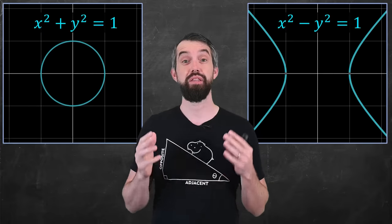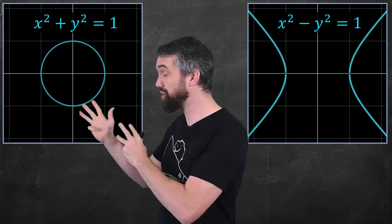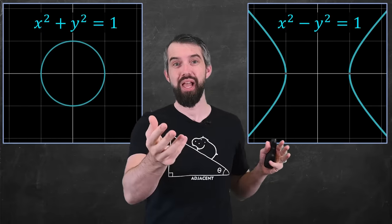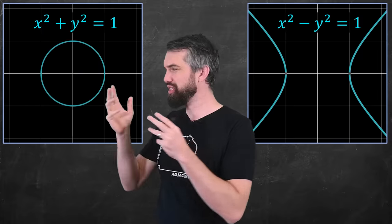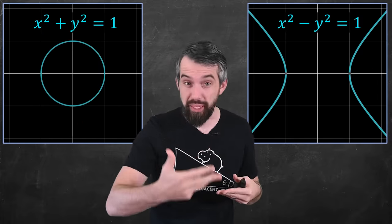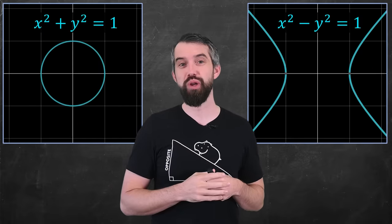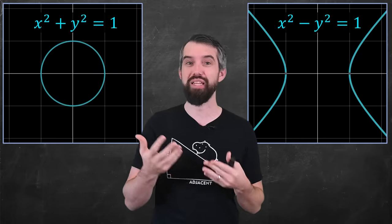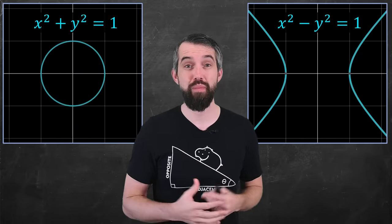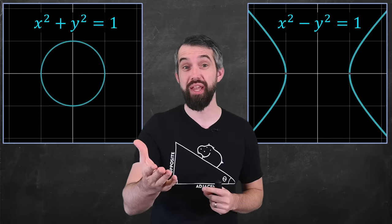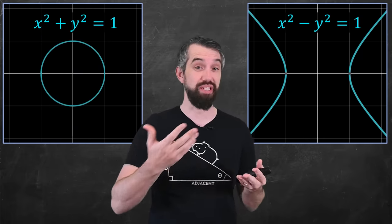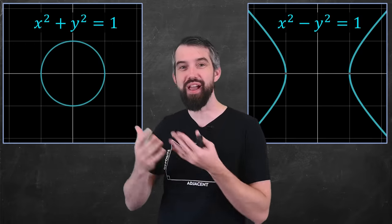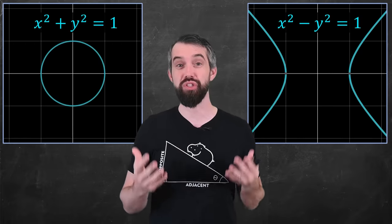Now we need to connect this to the geometry. Here are plots of a circle and a hyperbola — they're very similar. For the circle, it's x squared plus y squared equal to 1; and for the hyperbola, x squared minus y squared equal to 1. You might remember the Pythagorean identity for trigonometry that sine squared plus cosine squared equals 1, which satisfies the equation of a circle. Let's do the same kind of analysis for the hyperbola.